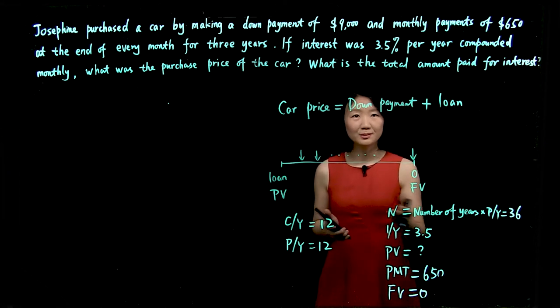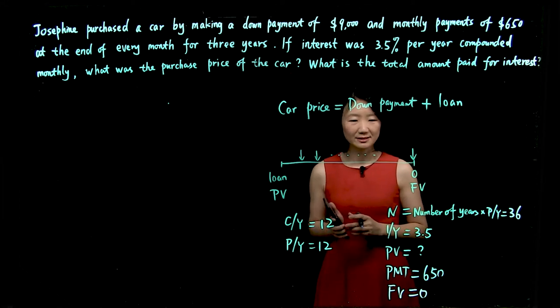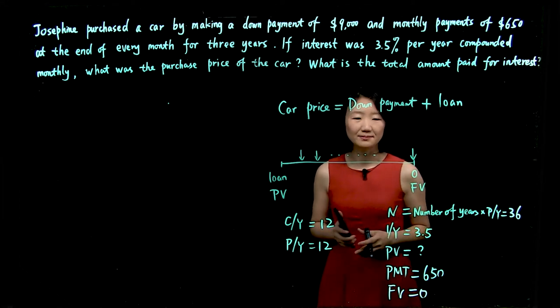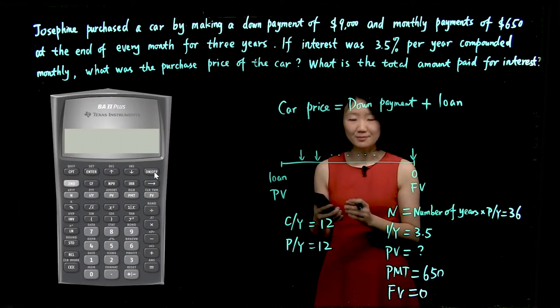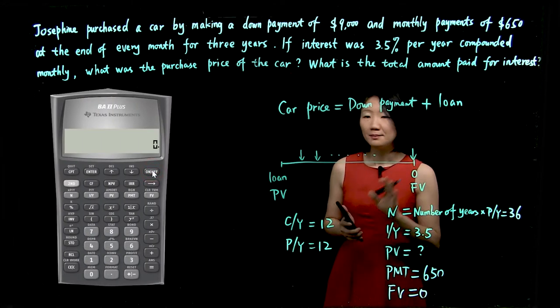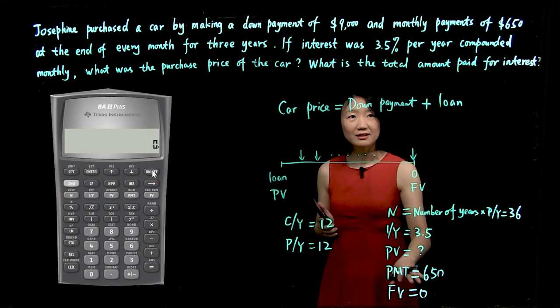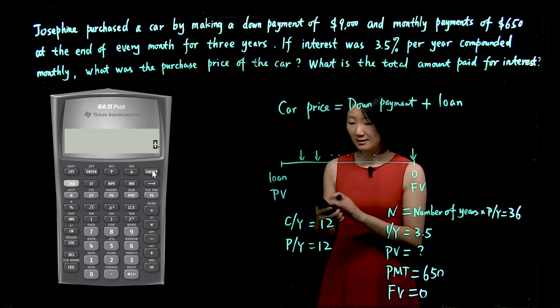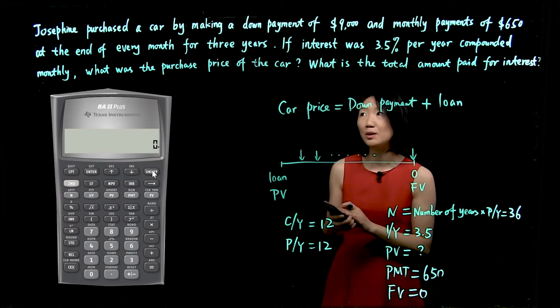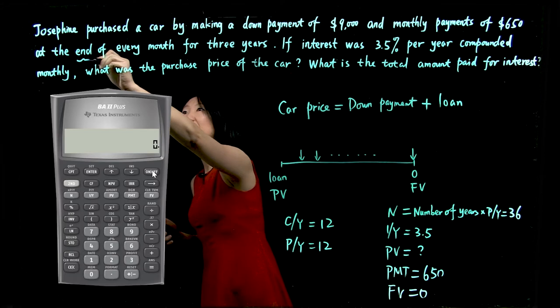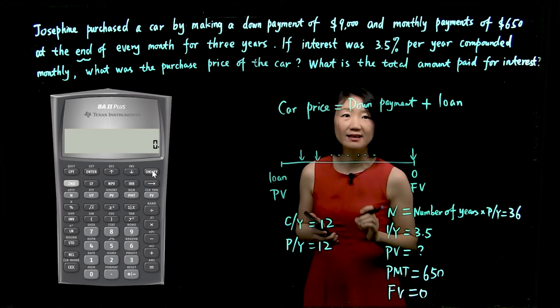Now we have all the variables we need to use calculator to find the value for PV. Let's turn on by pushing on and off button. Before we enter all these values, let's make sure the calculator is set at the end mode, because the periodic payment happens at the end of every month.